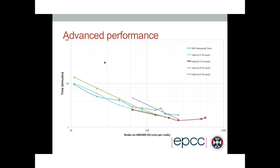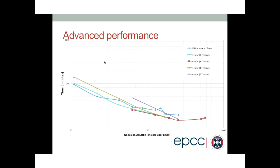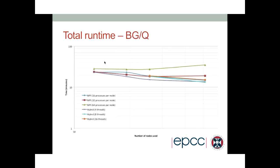The same pattern is true for the normal advance time. The hybrid code is worse for low core counts — especially with high thread counts — but better once we're scaling into the MPI-dominated regions. Looking at total run time combining initialization and advance time, it's not earth-shattering — not twice or four times faster — but we're getting around 25-30% faster using the hybrid code at large core counts where we know the MPI code is less efficient.